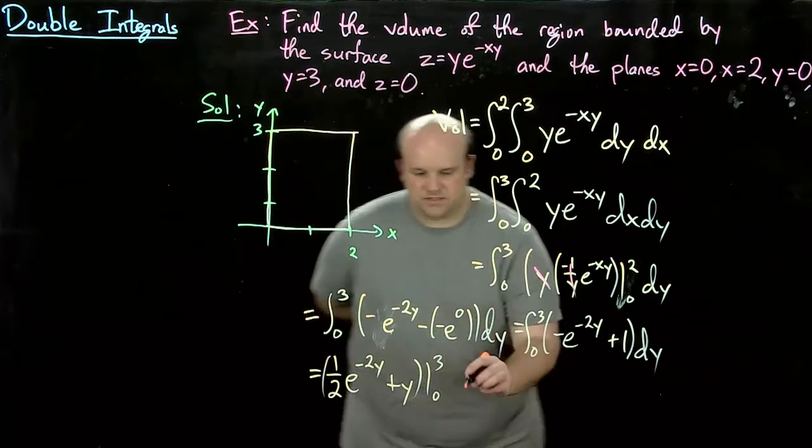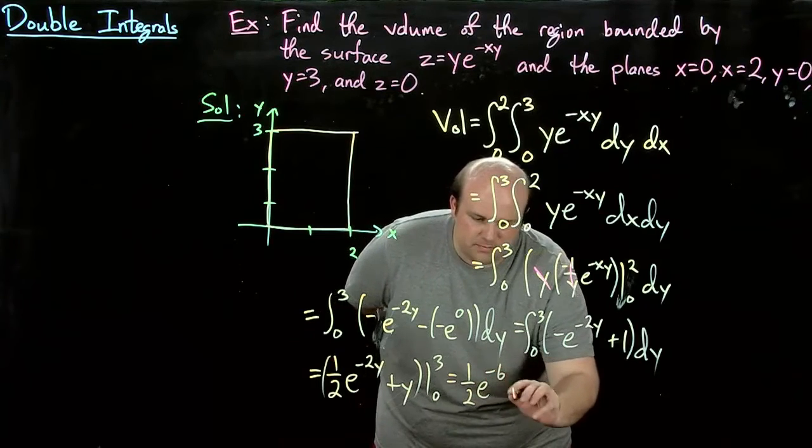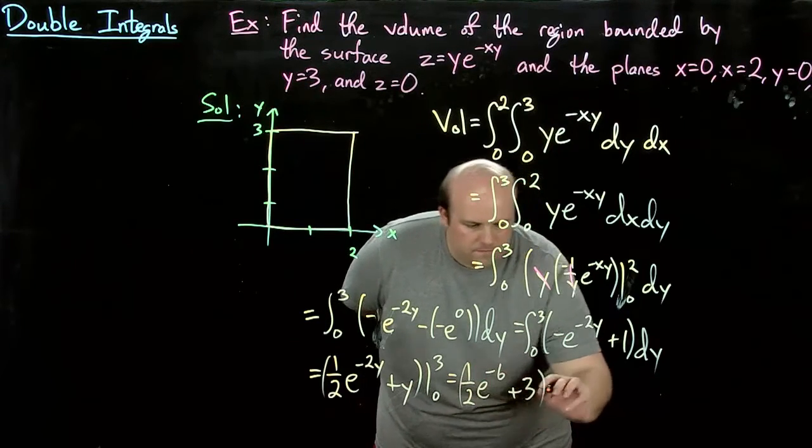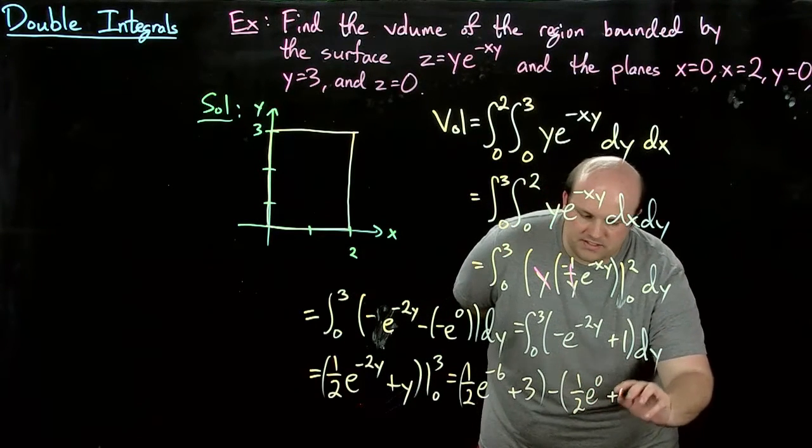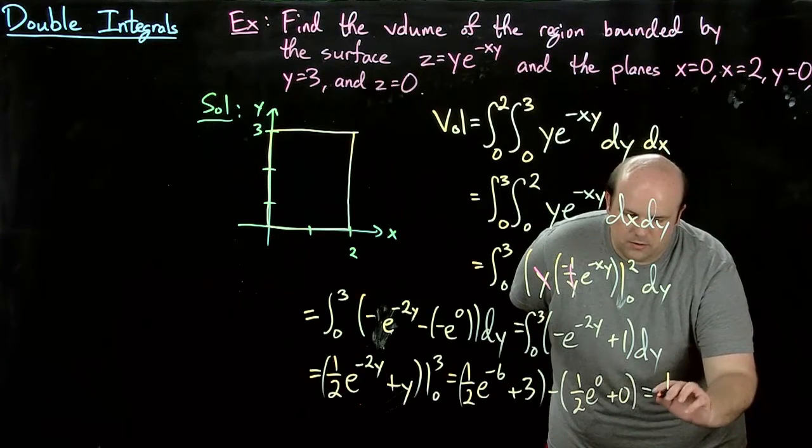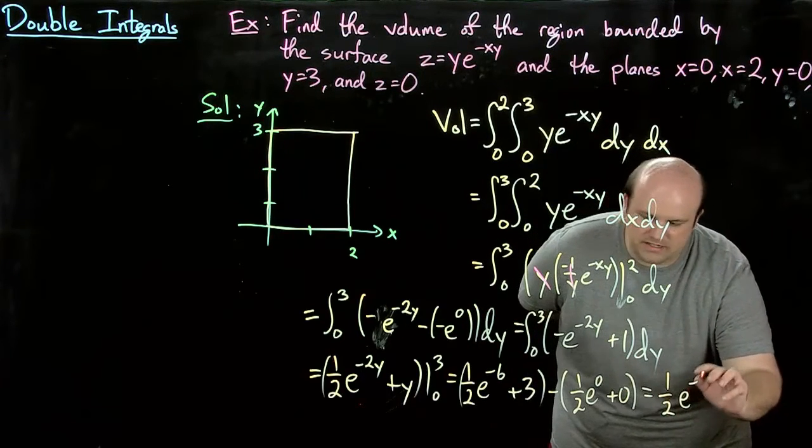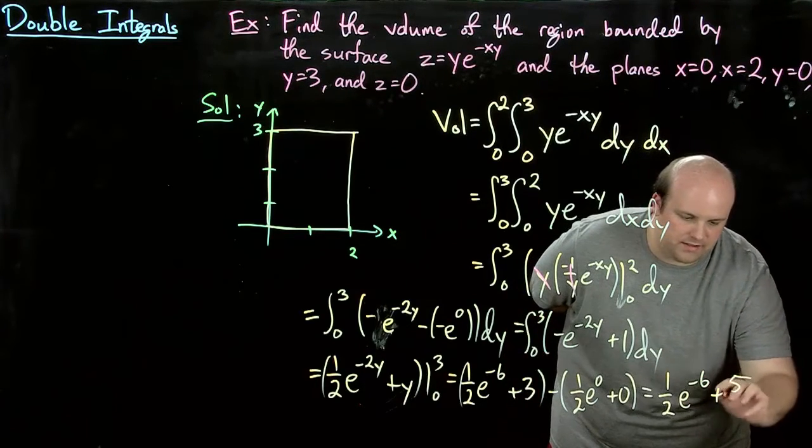So this gives us 1 half e to the minus 6 plus 3 minus 1 half e to the 0 plus 0. So that gives us 1 half e to the minus 6, and then 3 minus 1 half, so plus 5 halves.